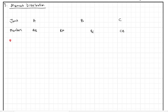Similarly, I like to put in the distribution factors. At AB, this is rigid, so that goes to zero. At BA, we had two-fifths, so I'm just going to write in 0.4. At BC, we had three-fifths, and that goes to 0.6. And CB was rigid as well, so that's zero.